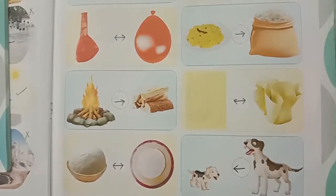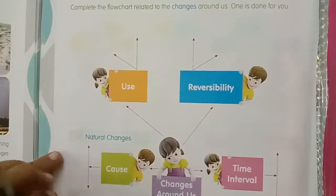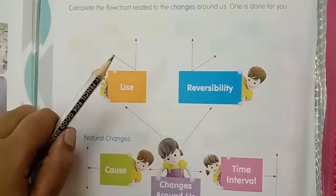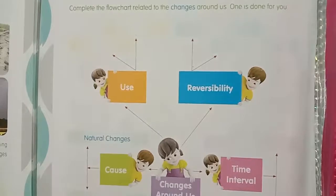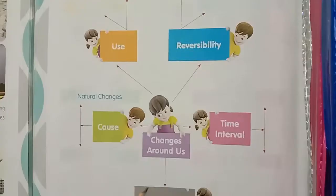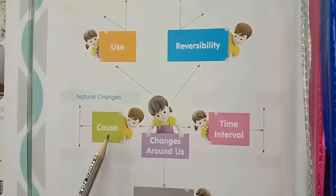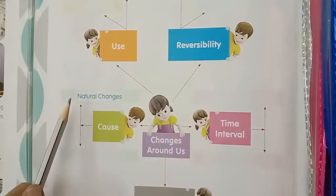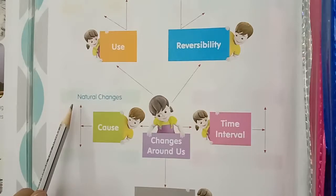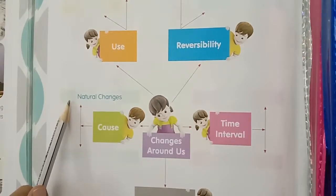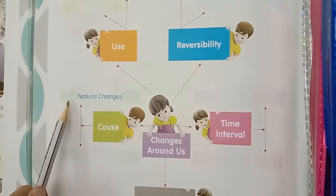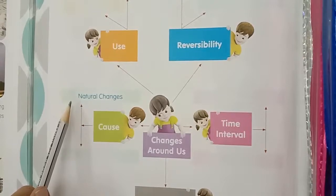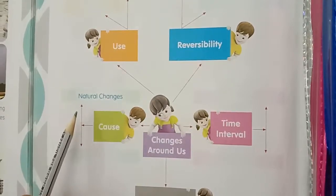Okay children, understood? Turn the page. See here children — complete the flowchart related to the changes around us, one is done for you. Changes around us cause natural changes and man-made changes. The changes that occur on their own — like germination of seed, rusting of iron, ripening of fruits, earthquakes, hatching of eggs, cyclones, and trees shedding leaves — are called natural changes.